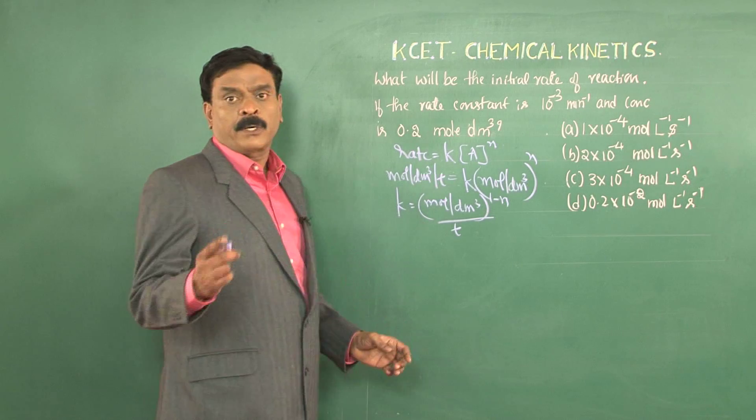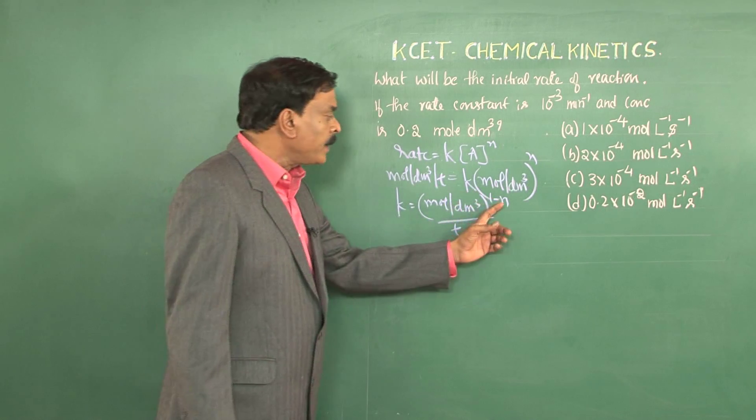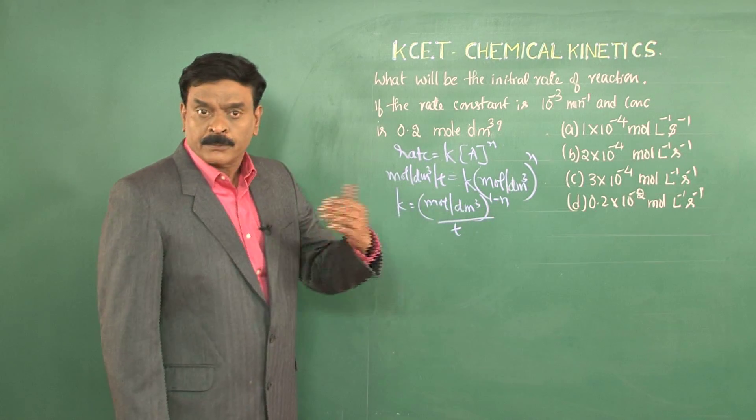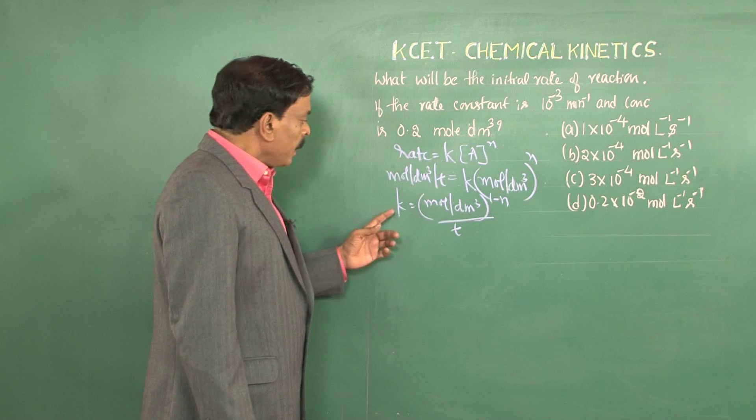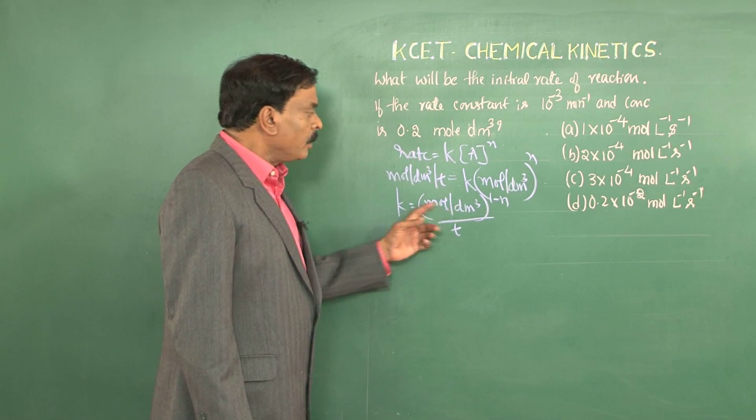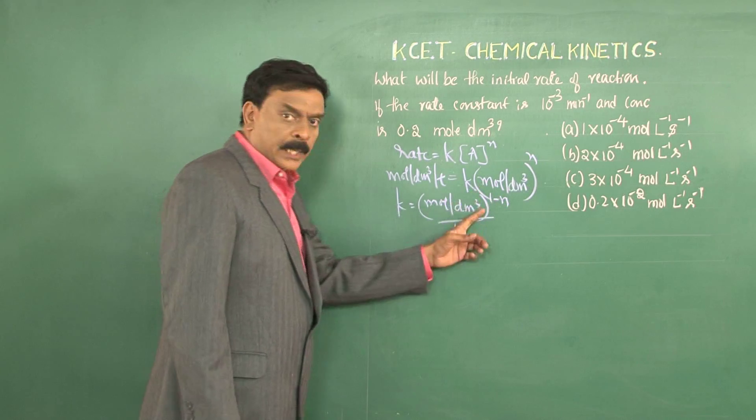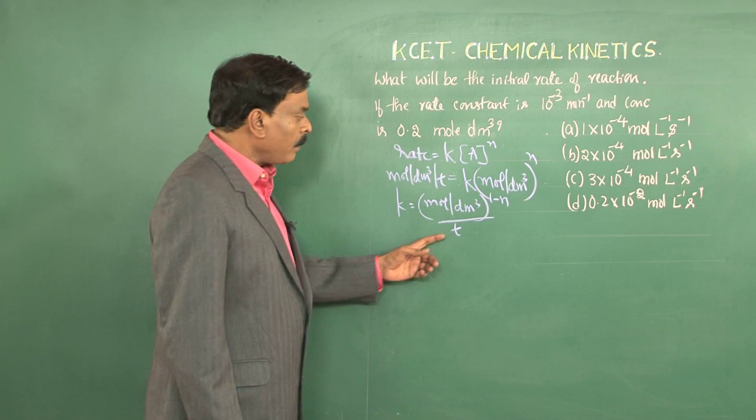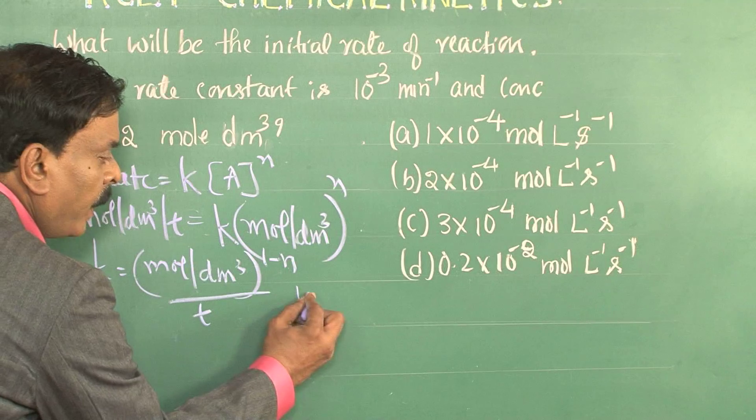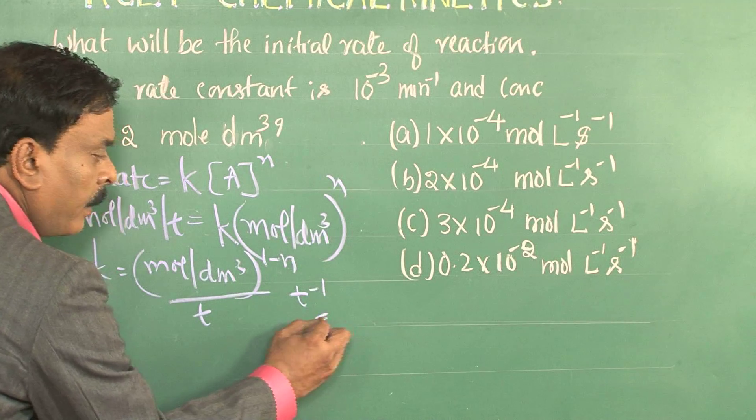In the case of a first order reaction, the value of n is 1. When n is 1, k will be equal to mol per dm cube to the power of 1 minus 1, that is 1 by time. In other words, the unit of first order reaction is time to the power minus 1.